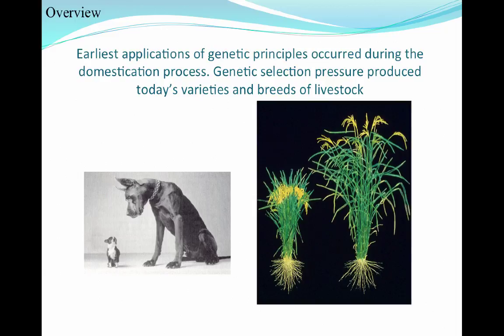When we look back at genetic history and study how technology has advanced, some of the earliest applications of genetic principles actually occurred during the domestication process — both in our plant and animal products. Plants grew stronger and bigger as we selected for them over time, and breeds of livestock did the same. Animals that were more docile, easier to train, or used as companionship were selected over time.